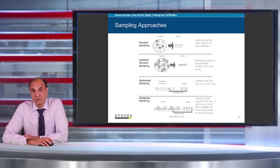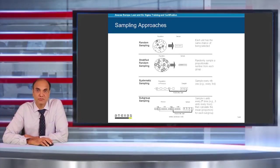The commonly used sampling approaches to avoid bias are random sampling, stratified random sampling, systematic random sampling, and subgroup sampling. Let us see one by one.